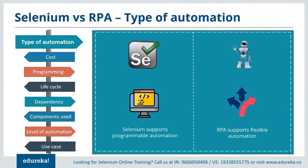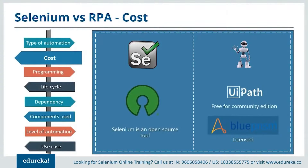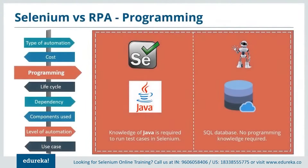Programmable automation can be used to change the sequence of any operation based on user requirements, whereas flexible automation is a hybrid of fixed and programmable automation. Now talking about cost: Selenium is an open source tool used for free. RPA has a set of tools like UiPath, Automation Anywhere, and Blue Prism. UiPath is free for community edition with licensed advanced versions; Automation Anywhere gives a free trial for a month with licensed advanced versions; and Blue Prism is completely licensed. Regarding programming knowledge: Selenium requires knowledge of Java to run test cases, whereas RPA does not require any coding knowledge as it deals with back-end processes and database operations.